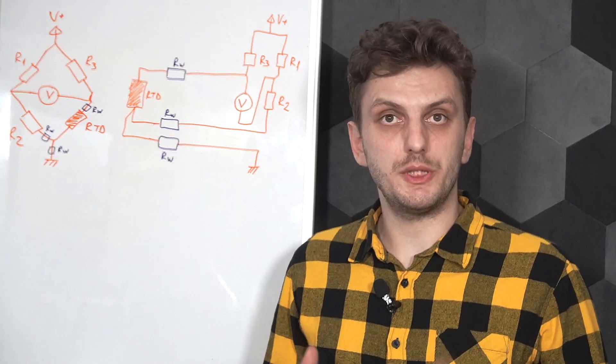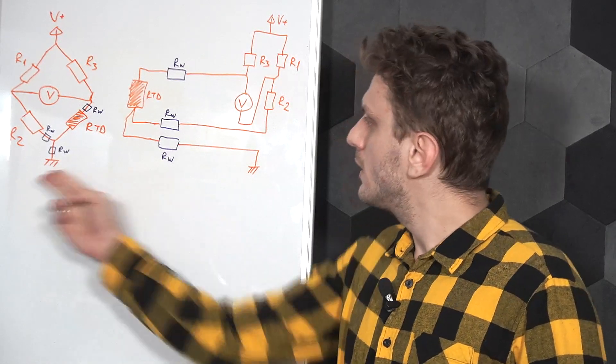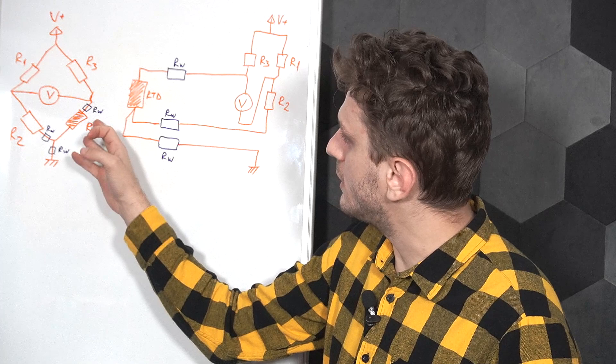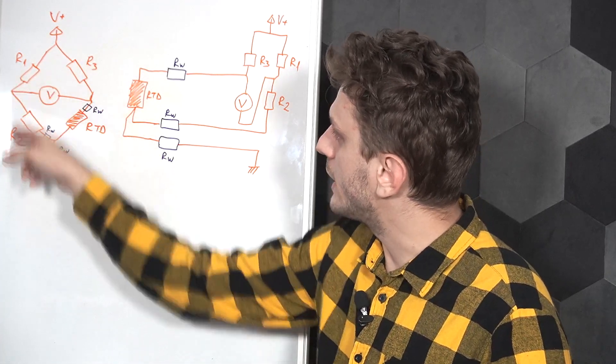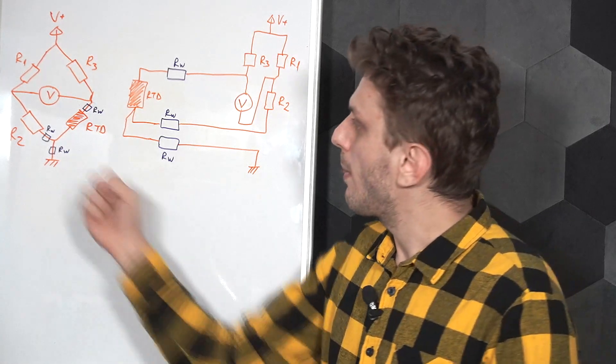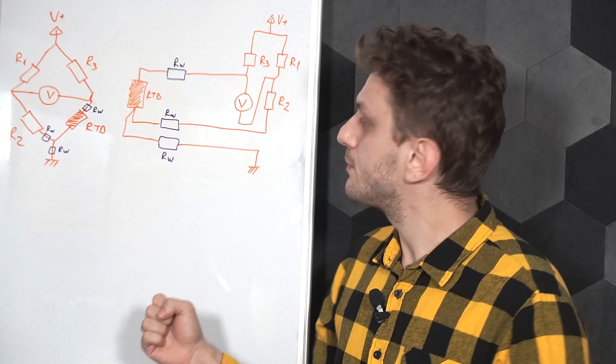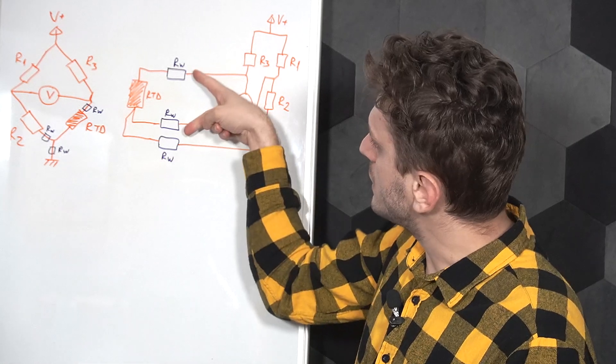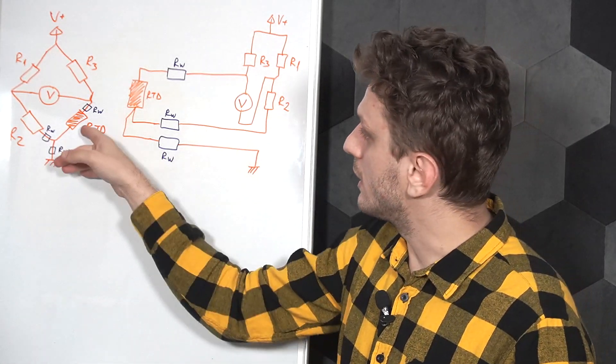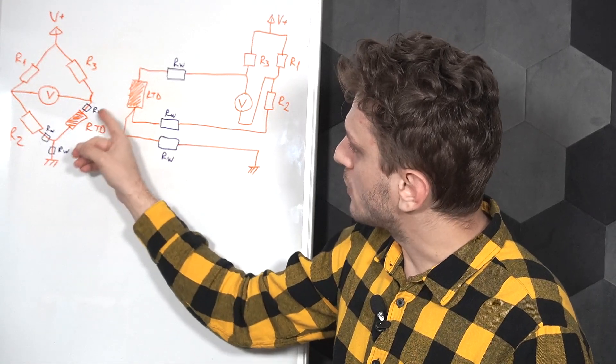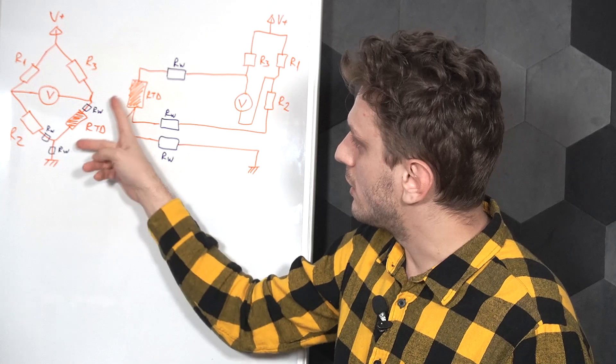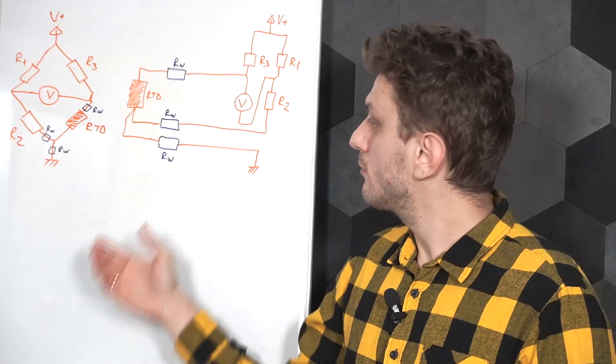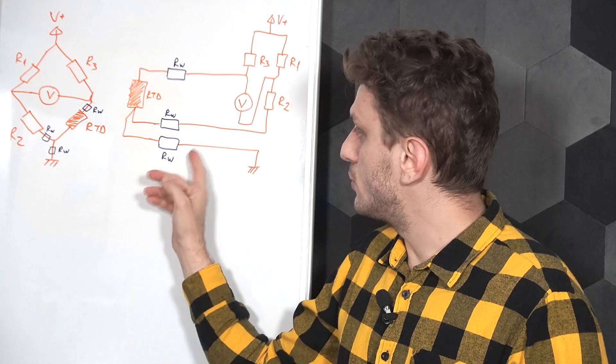The second method involves using a bridge measurement, but using only three wires. So these two circuits are equivalent. On one side we can clearly see the bridge measurement, so we have the RTD on one branch of the bridge, and then we have these other three fixed value resistors, and we're performing the measurement in between the two branches of the bridge. In the second drawing, we can see how the RTD is connected to the actual circuit. We're using two of these wires to connect the RTD to the bridge, and we can clearly see that one wire is in series with the RTD on one bridge, whereas the other wire is in series with R2 on another branch of the bridge, and then the bridge itself is connected to ground through the third wire.